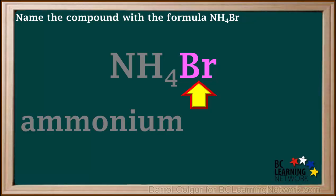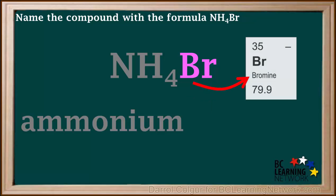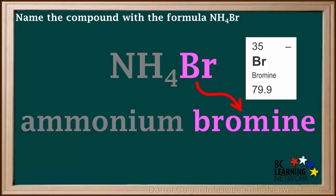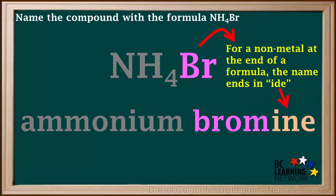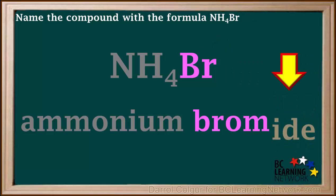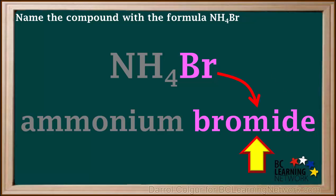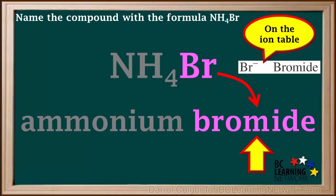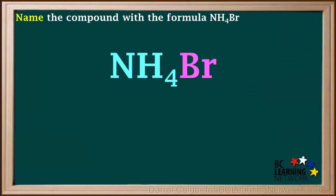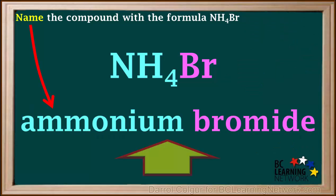The formula ends with a single element Br, which the periodic table tells us is bromine. For a non-metal element at the end of a formula, the name must be changed to end in -ide, so we replace the -ine with -ide and we're left with the name bromide. Alternately, we can find Br⁻ on the ion table and see that its name is bromide. So if a non-metal ion is on our ion table, we can just copy the name directly from there. The final name of this compound is ammonium bromide.